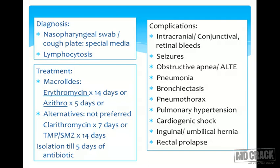Treatment is macrolides — erythromycin for 14 days or azithromycin for 5 days. Note that erythromycin during infancy or the neonatal period is known to cause idiopathic hypertrophic pyloric stenosis, so monitor for vomiting. Alternatives are clarithromycin and trimethoprim-sulfamethoxazole, though not preferred. Cases are isolated until five days of antibiotic treatment are completed.